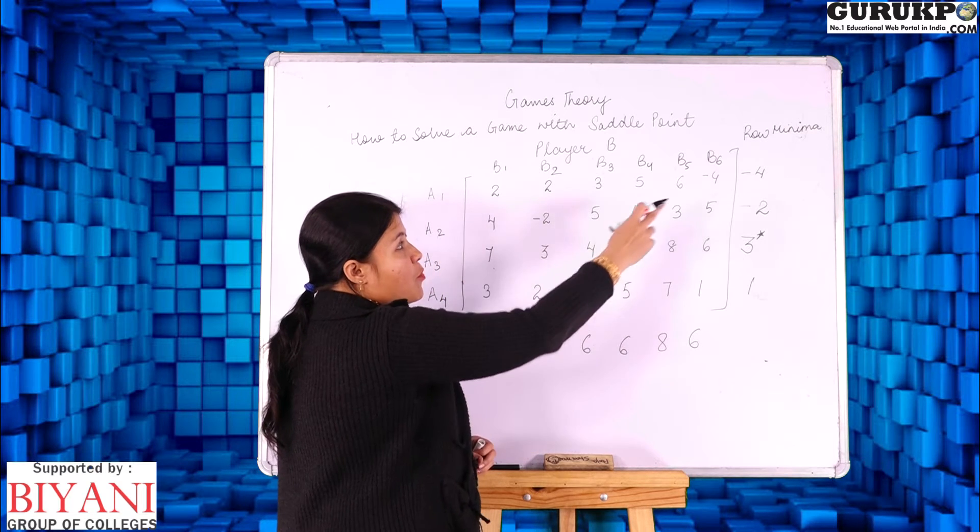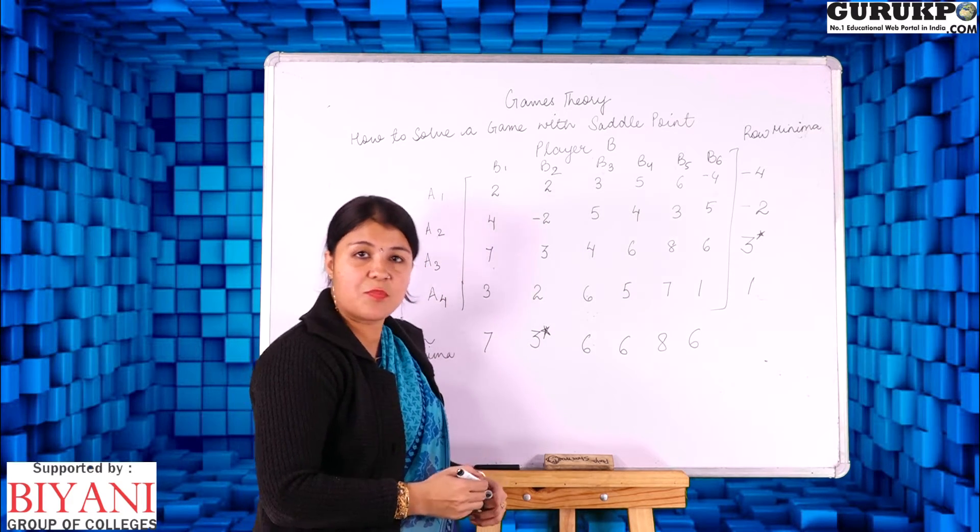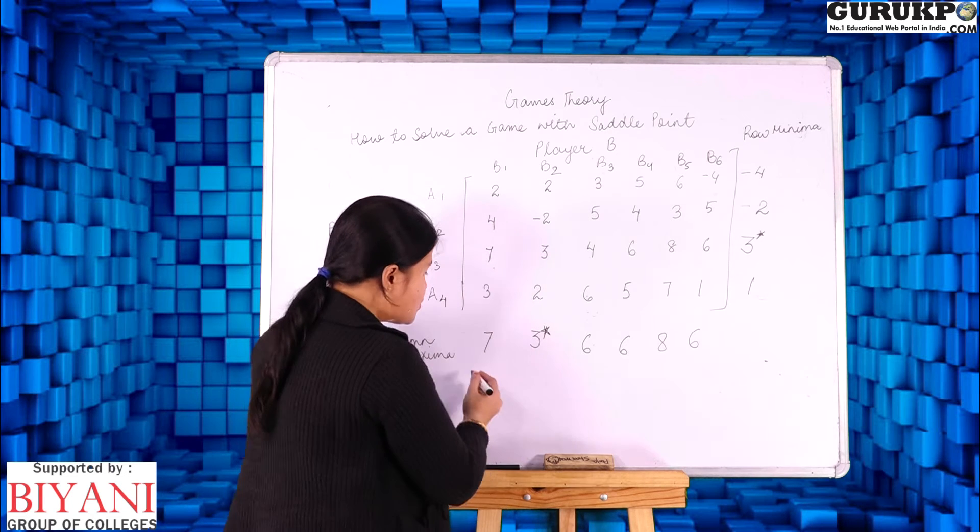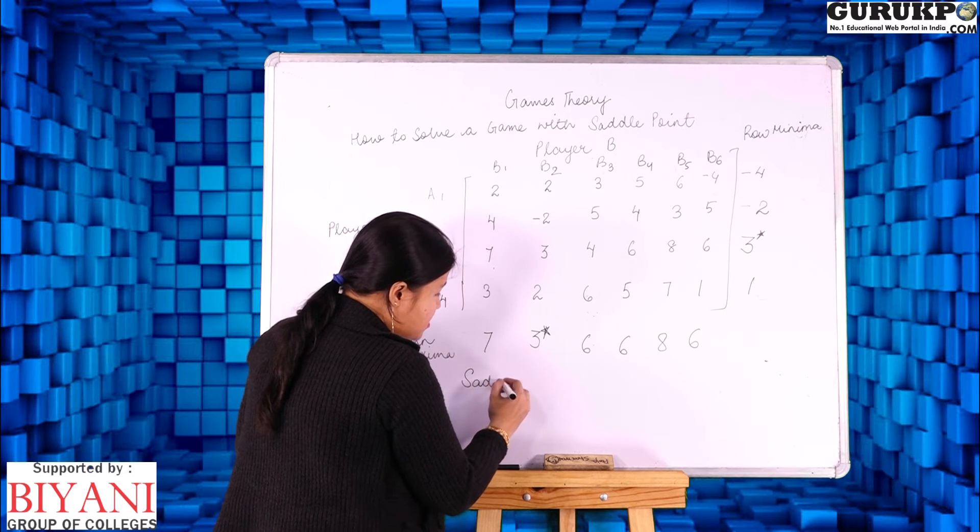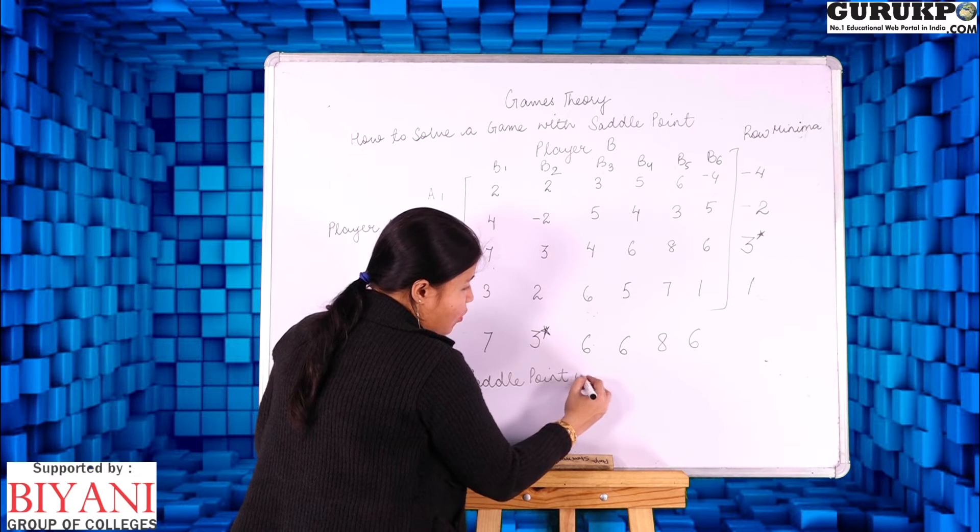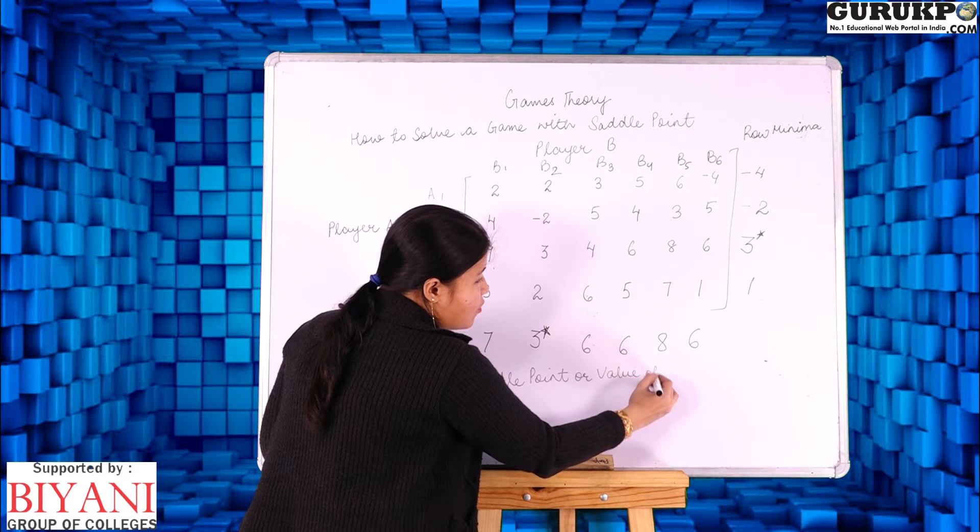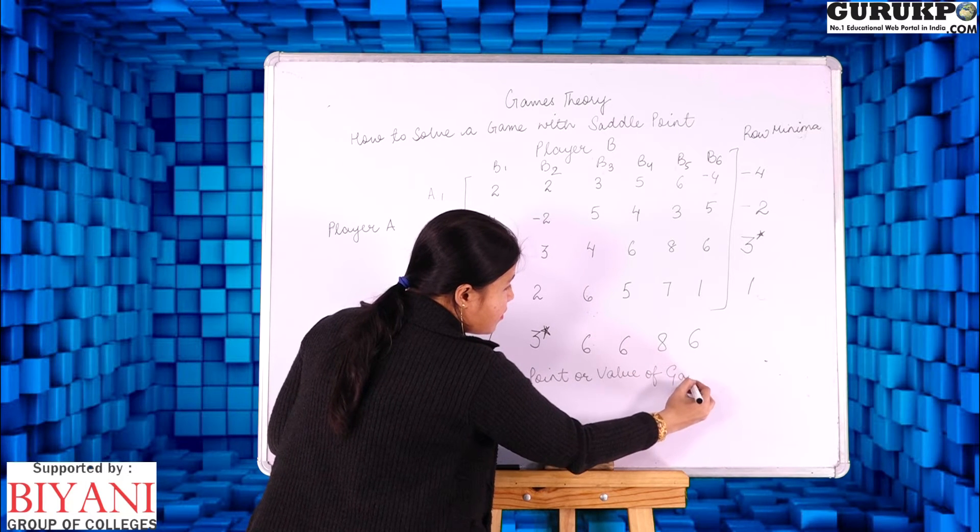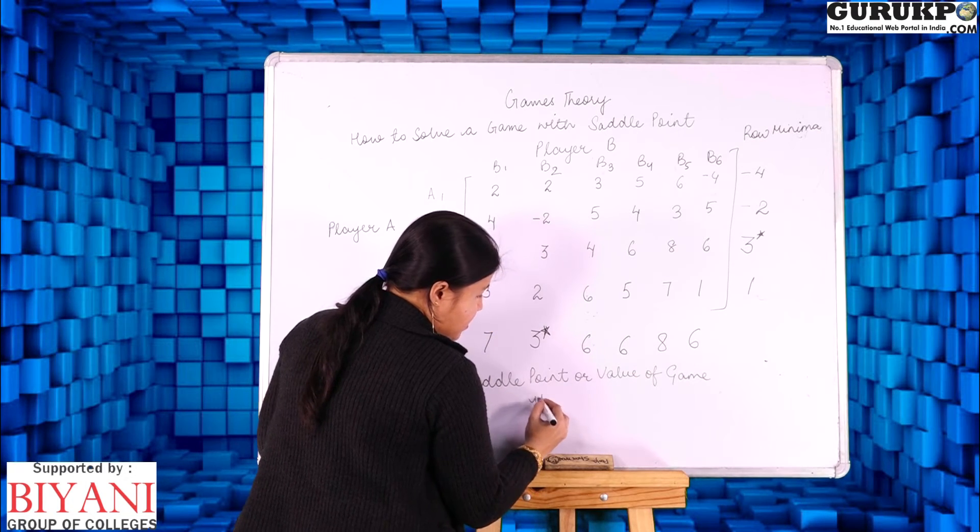The common entry from row minima and column maxima is our saddle point or value of game. So our saddle point or value of game is 3.